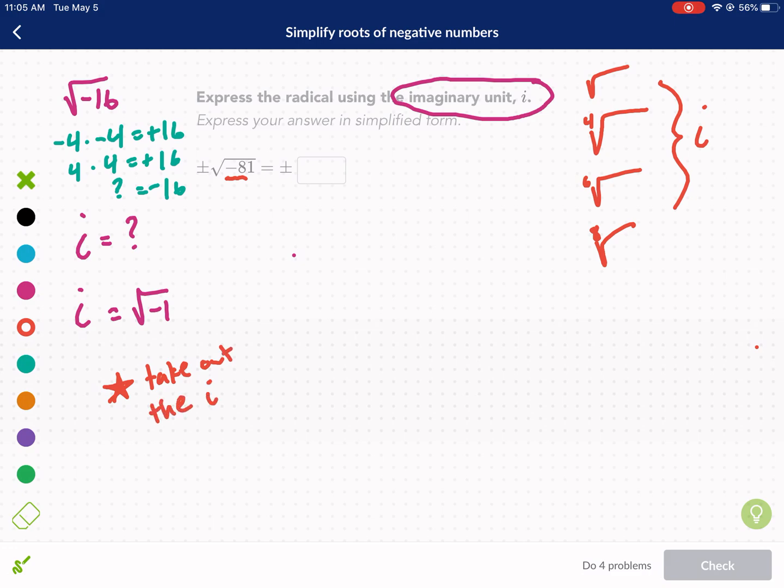So what we're going to do here, if we look at plus or minus the square root of negative 81, what we're going to do is we're going to separate this into two problems. We're going to separate it into the square root of negative 1 times the square root of 81. Once we do this, we recognize that we already have an identification of i.